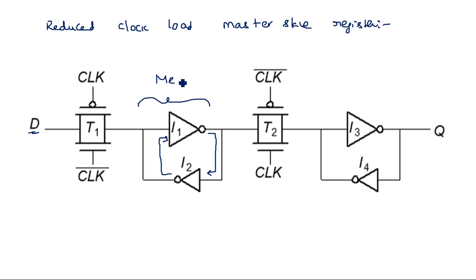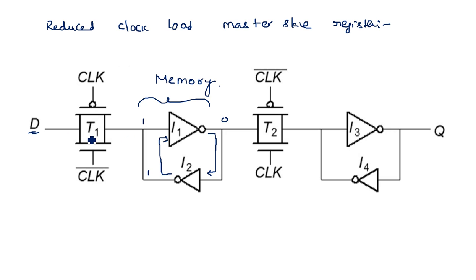This particular logic circuit connected in a circular fashion is nothing but a memory cell. Suppose a one is here — it passes through the inverter and is converted to zero, and zero applied to the next inverter is converted back to one, cycling one-zero-one-zero. The memory is maintained as long as transmission gates T1 and T2 are off. When they are on, the data stored in memory can be transferred to other devices.